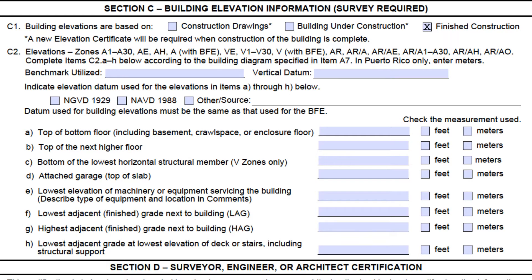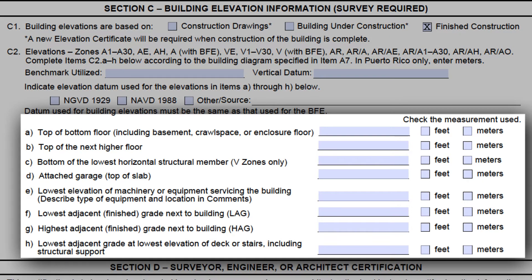Moving on to the elevations themselves — before we go through each one, the local official is not required to make sure the elevations are correct. The licensed professional certifies those with his or her signature and seal, but it's the local official's duty to make sure the right elevations are filled out, seem about right, and make sense with the building diagram used in field A7. This is one of the trickiest things to do with the ECs. Also, elevations for all relevant floors, mechanical equipment, and adjacent grades should always be given. If they are irrelevant to the building, an NA should be placed in the field.